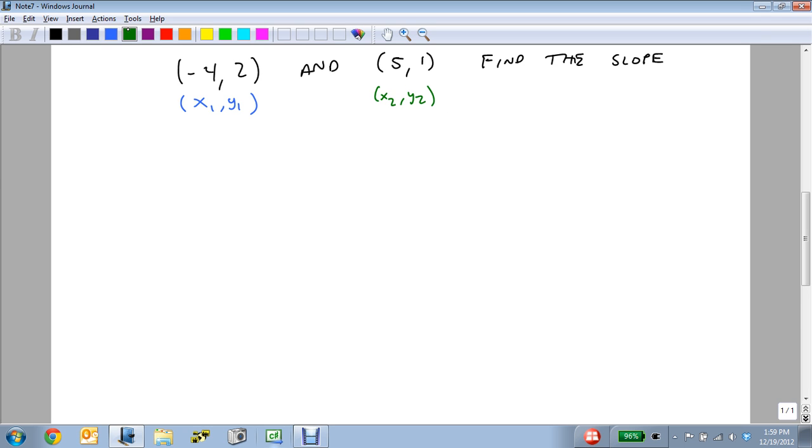And so we're going to pick our y2 value first. So m equals y2 minus y1 over x2 minus x1. And so this is going to be 1 on top, 5 on bottom.